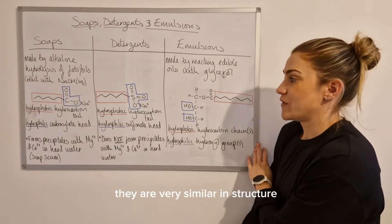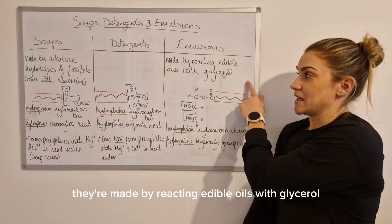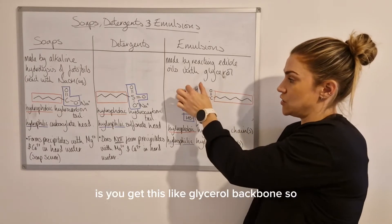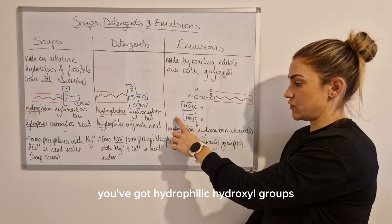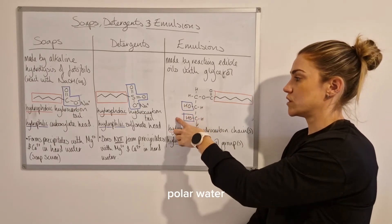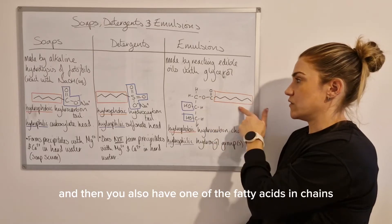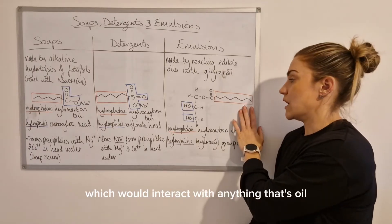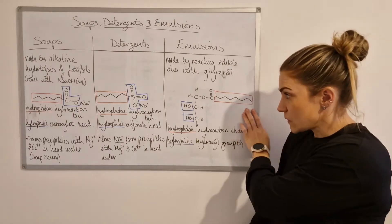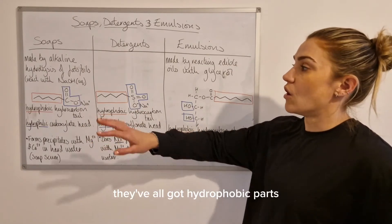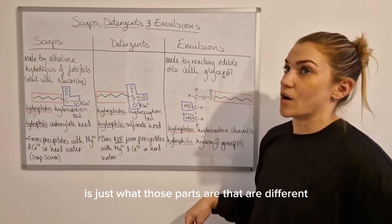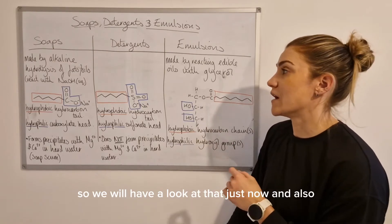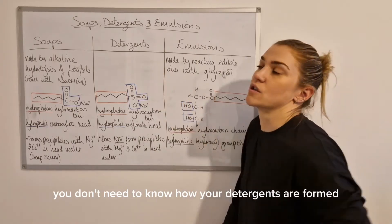Emulsions are very similar in structure as well; however, they're made by reacting edible oils with glycerol. When you react the edible oils with glycerol you get a glycerol backbone where you've got hydrophilic hydroxyl groups that can interact with polar water, and then you also have the fatty acid hydrocarbon chains - the hydrophobic part - which interact with anything that's oil-based or non-polar. So they've all got hydrophobic parts and hydrophilic parts; it's just what those parts are that differs.